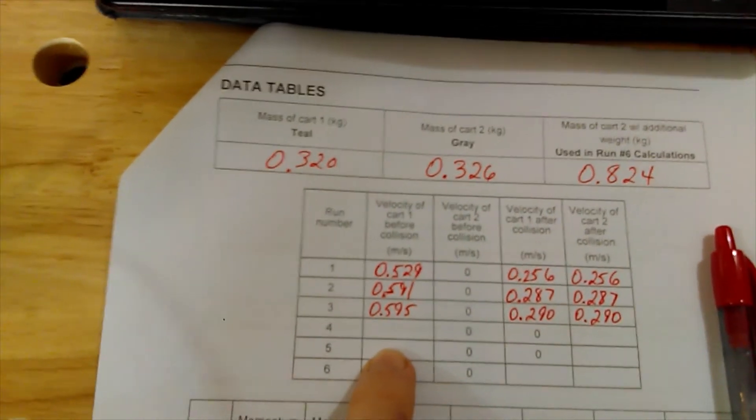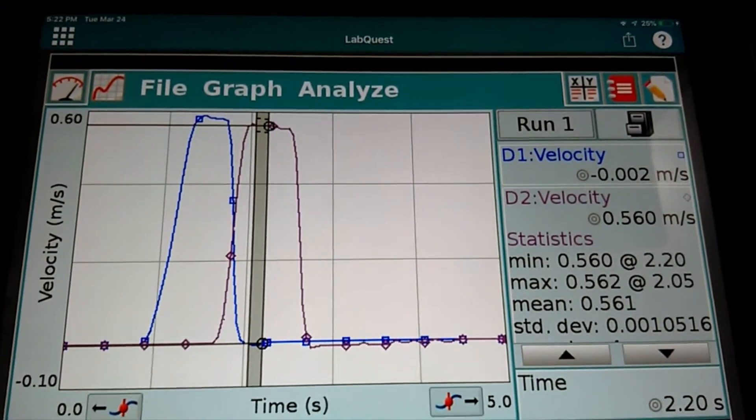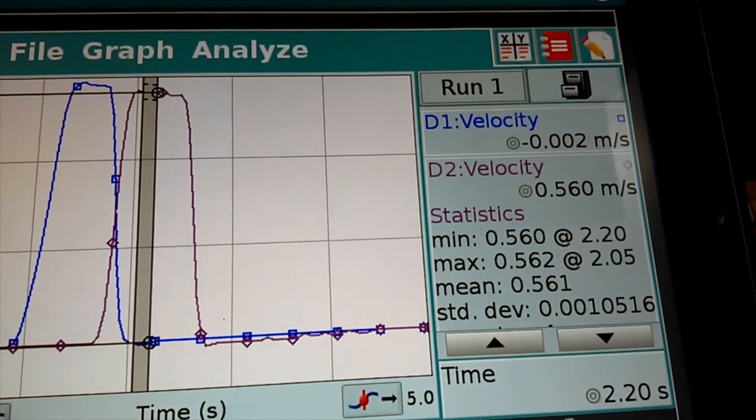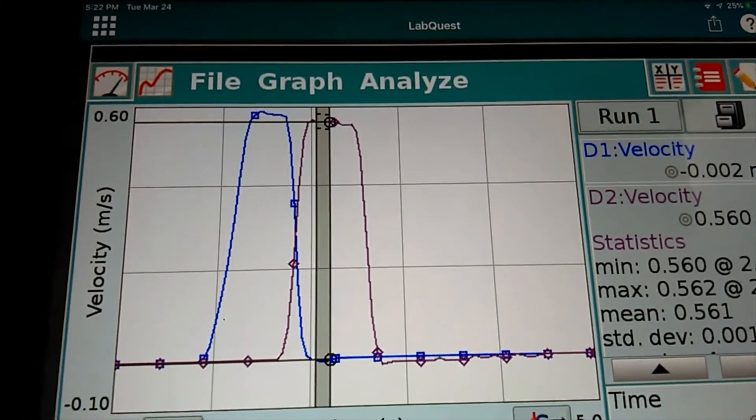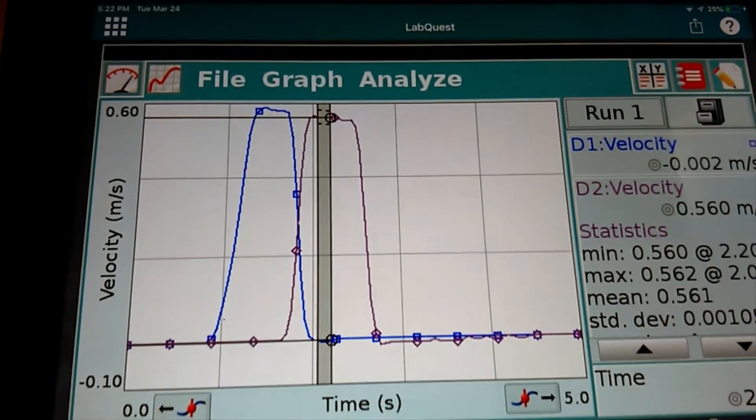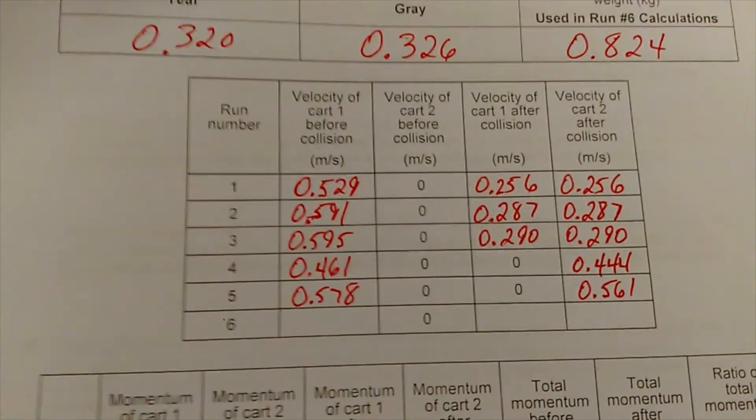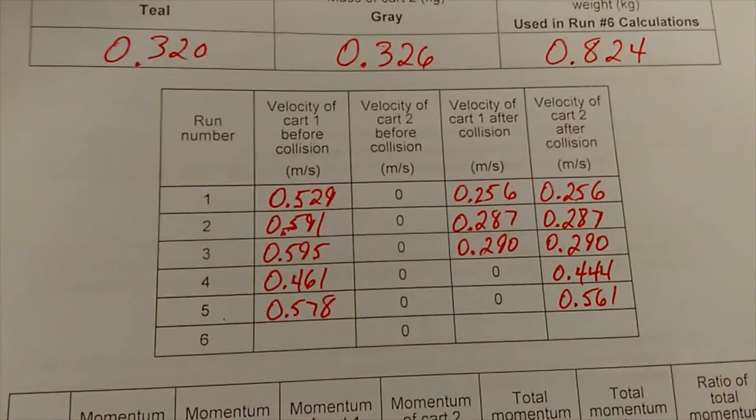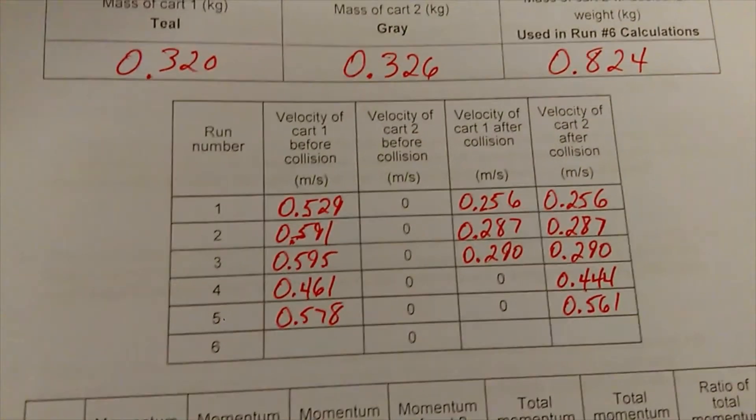Right now you're seeing the results from run number five. You're seeing this mean, 0.561. That's the speed of car two, that purple plateau up there. That's its average speed after the collision, same way we did for runs one, two, and three. Those results are over here for runs four and five. We're getting the speed of car one before the collision and speed of car two after the collision. Notice they're pretty close to each other, that's good.